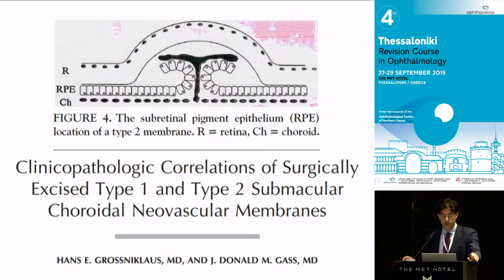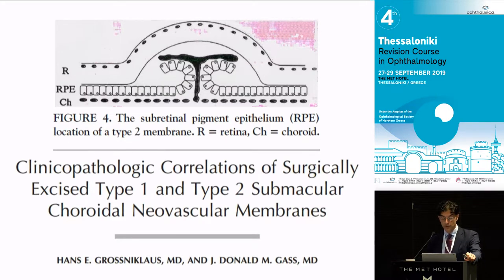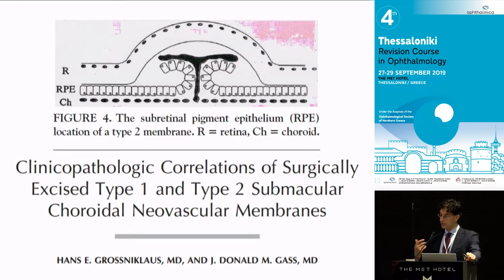In contrast, type 2 CNV is more commonly seen in younger patients — myopes, inflammatory membranes, and some AMD patients. From Don Gass's original paper, this explains why patients with type 2 CNVs did better with surgery than type 1s. Because provided the stalk of blood vessels is not under the fovea, when you remove the membrane you're not pulling off all the RPE, so they did relatively better.